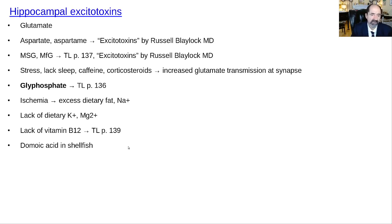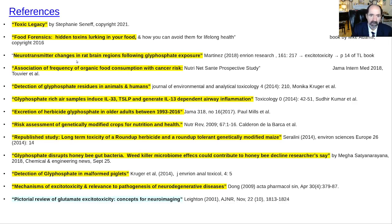Hippocampal excitotoxins — we'll talk about it in another lecture, but just be aware glyphosate is on that list, and these are all things that can decrease brain function. As for references, here's the book by Stephanie Seneff, and here's a bunch of papers about the things we talked about — there are tons more, but that's it for today. I hope that was helpful.